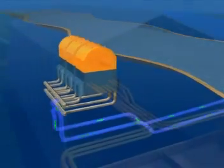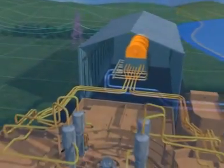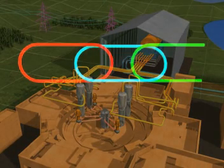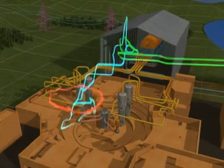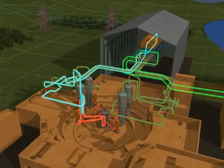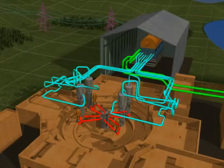To summarize, a nuclear power station is essentially three circuits: the primary and secondary circuits, which are both closed, and the cooling circuit, which opens to the exterior. All three work together to transform the energy liberated by nuclear fission into electricity.